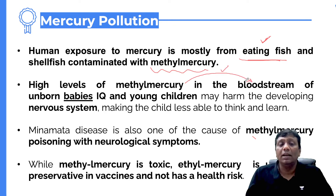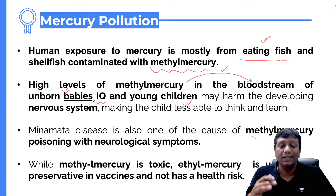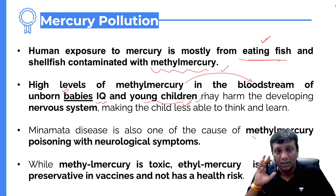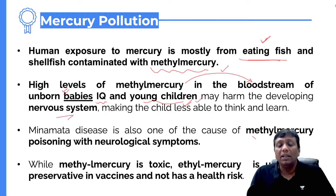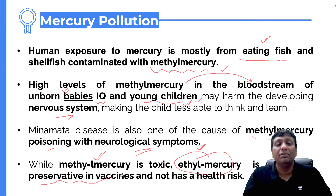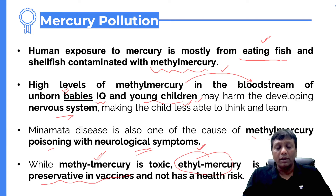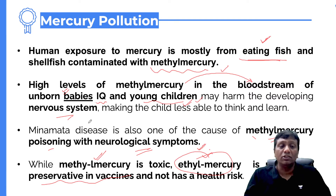Methyl mercury passes through the bloodstream into the umbilical cord and enters the baby, affecting brain development and IQ of unborn children and young children, damaging their nervous systems. Methyl mercury poisoning presents with neurological symptoms. In contrast, ethyl mercury is used as a preservative in vaccines — it does not destroy the nature of the vaccine. Vaccines require minimum refrigeration temperatures to preserve their nature. Ethyl mercury is an alternative to methyl mercury as it is not toxic, so it poses no health risk and can safely preserve vaccines.